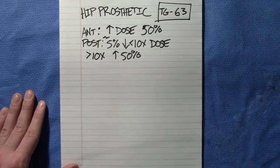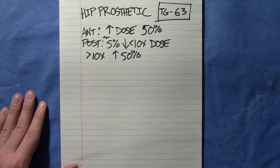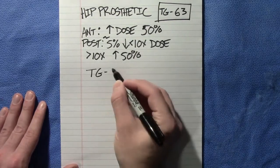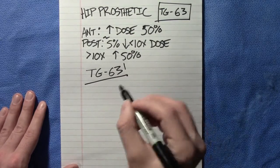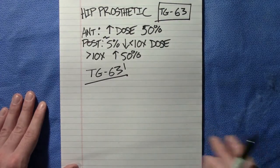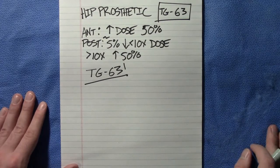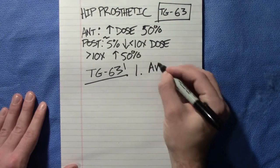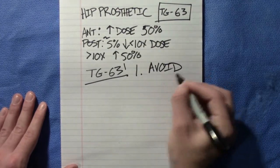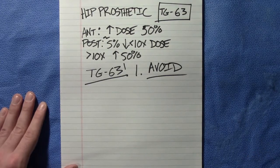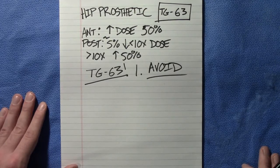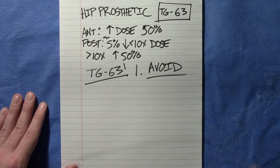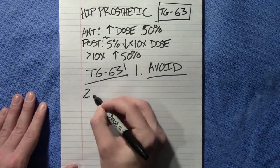What is the best plan of action when you see or have to plan a patient with a hip prosthetic? First, reference TG-63 — always reference any relevant task group. The first and most obvious step is to simply avoid the prosthetic altogether. If you can change the beam arrangement — whether you use IMRT, a four-field box, or a four-field diamond — do something to avoid that prosthetic. That is choice number one, because then it doesn't affect the dosimetry.